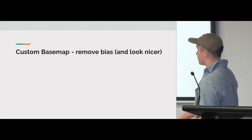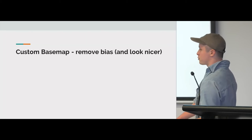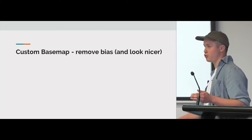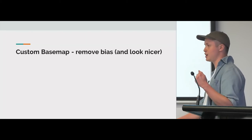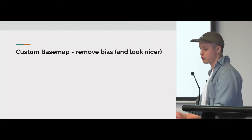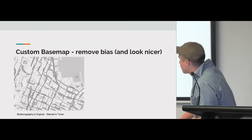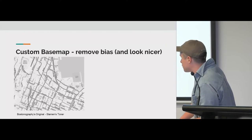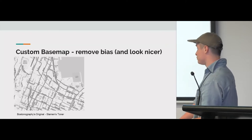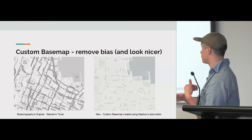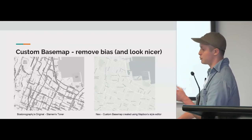I used Mapbox to make a custom base map. I was looking for a base map that didn't have neighbourhood labels, because if you're labelling where the neighbourhood is, you're going to create implicit bias. I started with Stamen's Toner, which is a nice base map but a bit harsh, so I ended up with something nicer — the green space is a lot lighter and there are no neighbourhood labels.